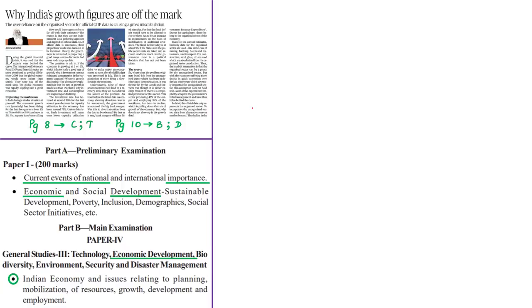This editorial explains why India's growth figures are off the mark — why they are inaccurate. Throughout the editorial, the author explains the economic slowdown, the measures taken by the government, and the effectiveness of those measures. The author's view is that government announcements will not be effective because they do not solve the source of the problem — the informal sector, or unorganized sector. The syllabus relevant to this analysis is given for reference.